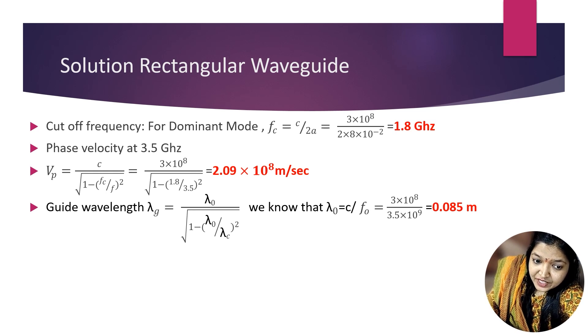Then phase velocity at 3.5 GHz. Phase velocity vp = c/√(1-(fc/f)²). Put the values: c = 3×10⁸, fc = 1.8 that we already calculated, and f is the operating frequency = 3.5 GHz. Your answer is 2.09×10⁸ m/s.